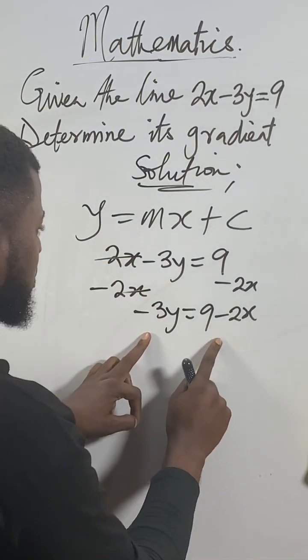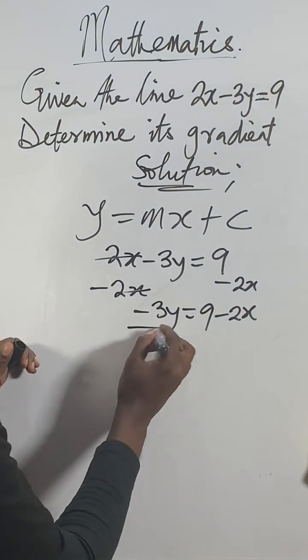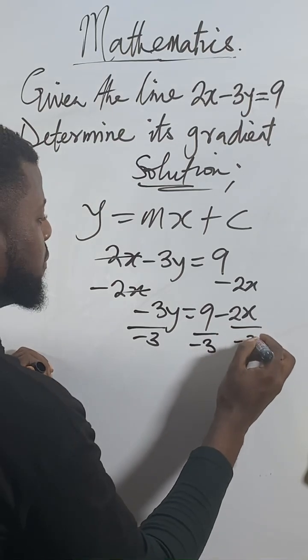Remember I want to make only y remain, so I will divide both sides by -3. Divide both sides, each of them by -3.